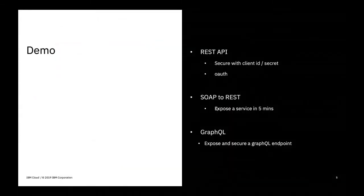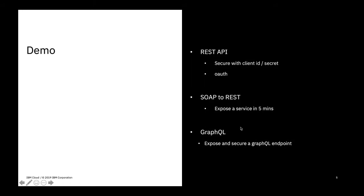That's probably the high-level overview of API Connect. If you need more details, you can reach out to IBM and we can come to your organization for a deeper dive into the product offerings and licensing. Now I'm going to do a demonstration on three different use cases. I'll show how we can bring in a REST API definition and secure it with a client ID, then add OAuth credentials. I'll also show how we can take a simple SOAP WSDL definition and expose it in API Connect very quickly. And lastly, I'll show how we can expose and secure a GraphQL endpoint.